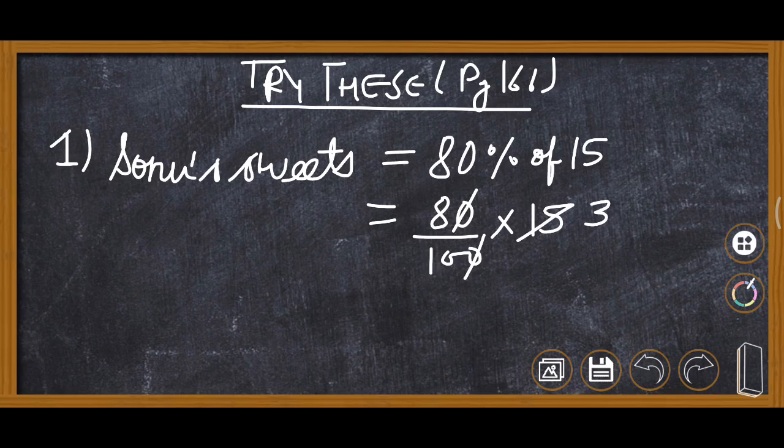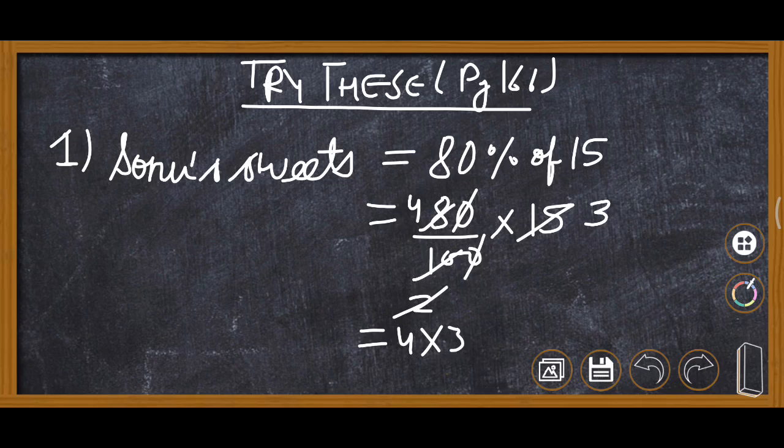So 80 upon 100 into 15, remove 0 by 0, 5 threes are 15, 5 twos are 10, 2 fours are 8. So 4 and 3 is left, 4 into 3 is 12. Now 12 sweets will be given to Sonu.